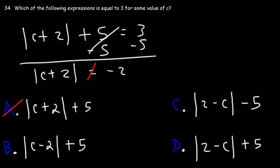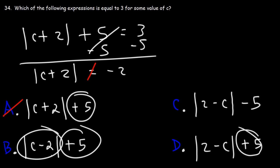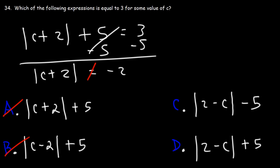Now looking at B and D, they're very similar. We have an absolute value expression plus 5. So just by looking at that, we could eliminate B and D.